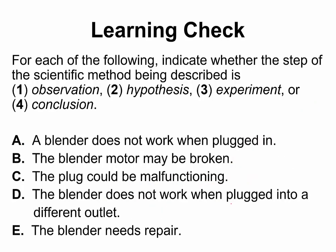Let us take a look at one more example. For each of the following, indicate whether the step of the scientific method being described is observation, hypothesis, experiment, or conclusion. A blender does not work when plugged in — you go to your apartment, plug in your blender, and find out that it is not working. That is simply an observation.